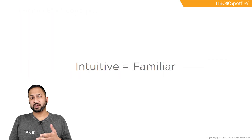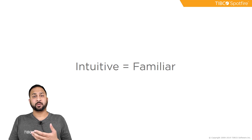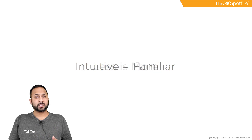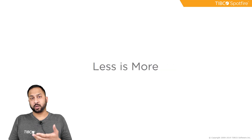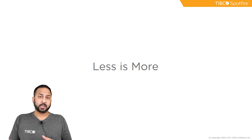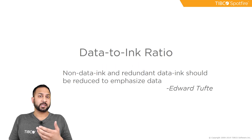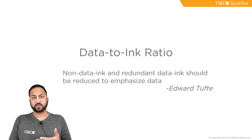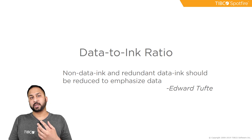One is that intuitiveness is familiarity. If you want to create an intuitive interface, try to use design aspects that people are already familiar with. We'll go over some examples in this video. The other idea is that less is more. You want to be very judicious with what you're showing so that you don't overcrowd the visualization and that you can be very clear with what the data is communicating. This is related to the data-to-ink ratio coined by Edward Tufte, where you really want to emphasize the visual aspects of the data and try not to crowd the visualization with things that can be distracting.